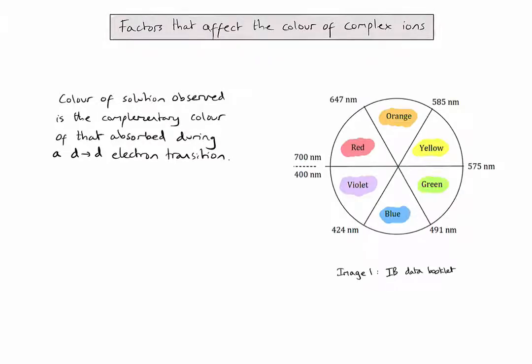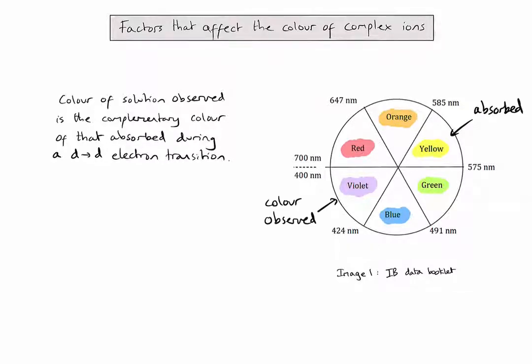So if, for example, the wavelength of light absorbed by the electron transition was found in the yellow part of the visible spectrum, we would predict the colour of the solution to appear violet, which is opposite yellow on the colour wheel. It's the size of the energy gap between the split D sublevel that affects the colour that's absorbed and therefore the colour that's observed in the solution.